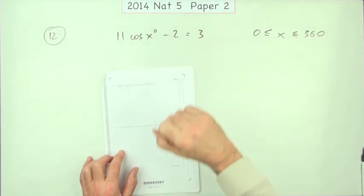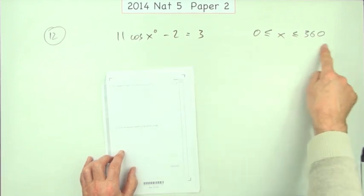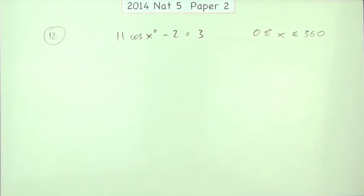Number 12 then, from the second paper of the 2014 National 5. The little trig equation. Remember there's always going to be two answers because it's to go through a complete wavelength here. Three marks.